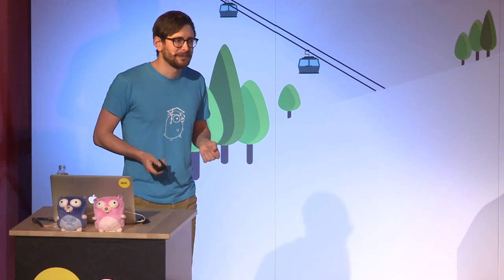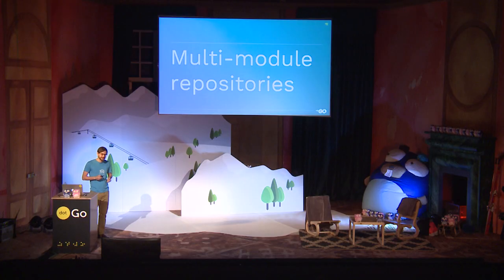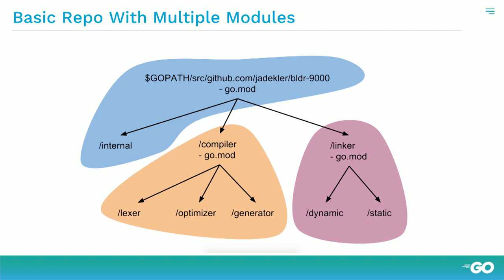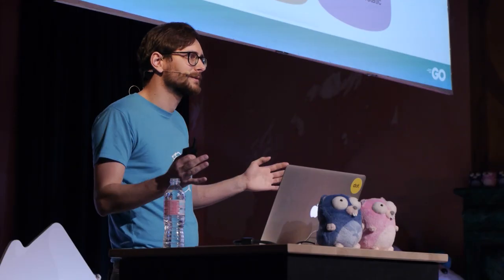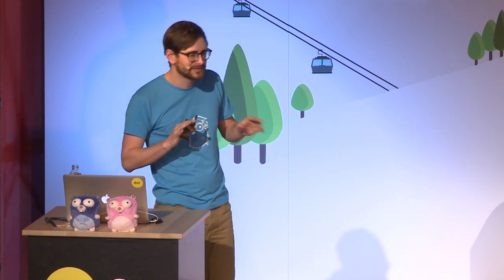This talk is about multi-module repositories, not just module repositories. Using the same Builder 9000, let's imagine it having multiple modules. Here's Builder 9000 again — I now have three go.mods: one at the root, one in compiler, and one in linker. A module includes packages recursively down until it sees another go.mod, and that go.mod carves out a module from the upper-level module. I'll try not to use the terms 'parent' or 'sub-module' because that conflates it with git modules — it's completely different.